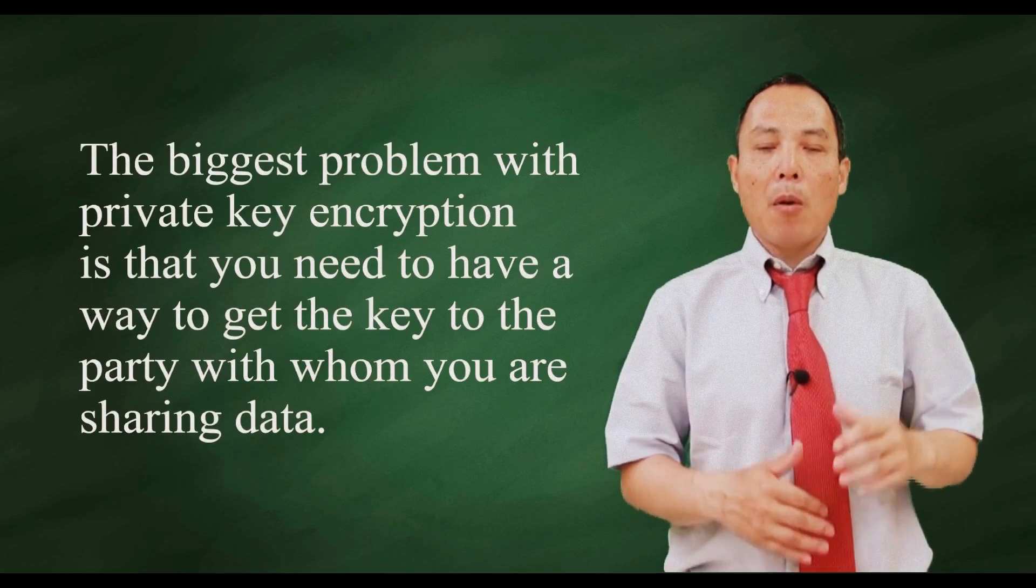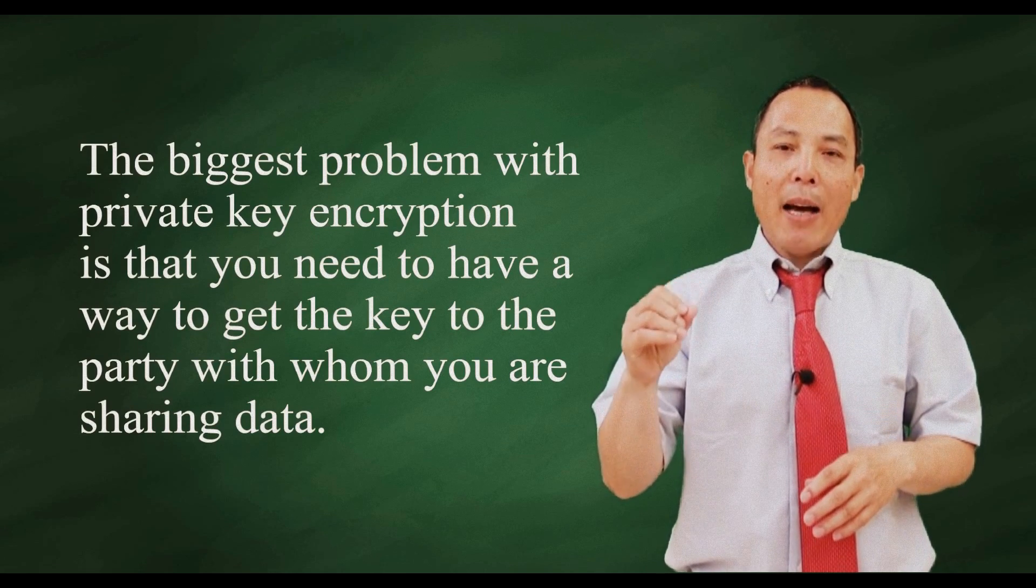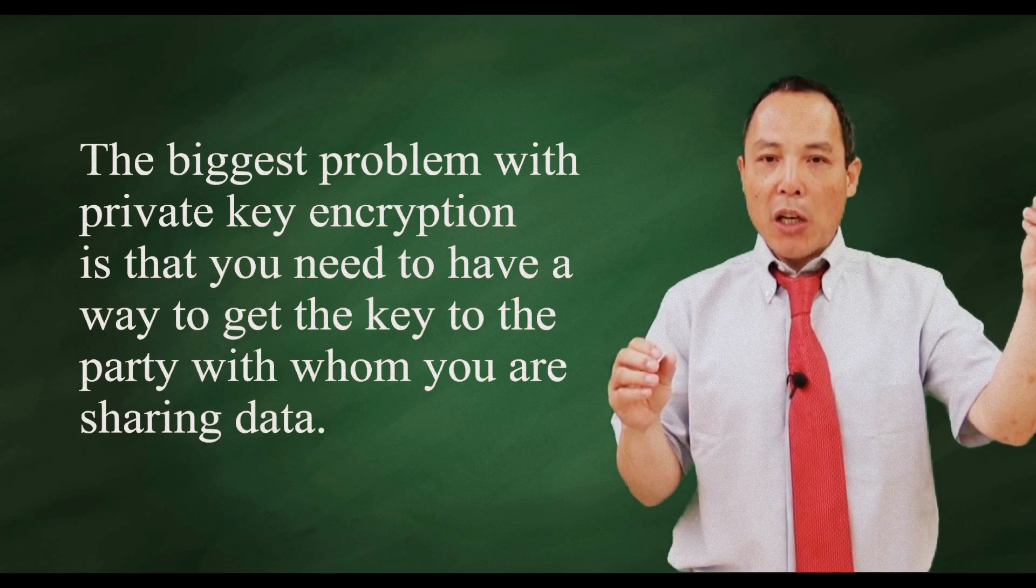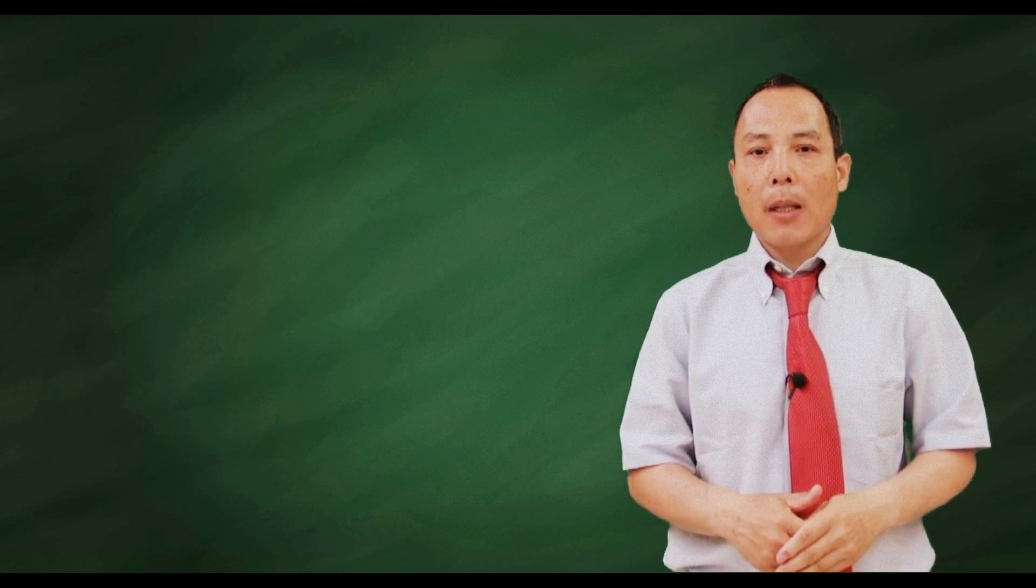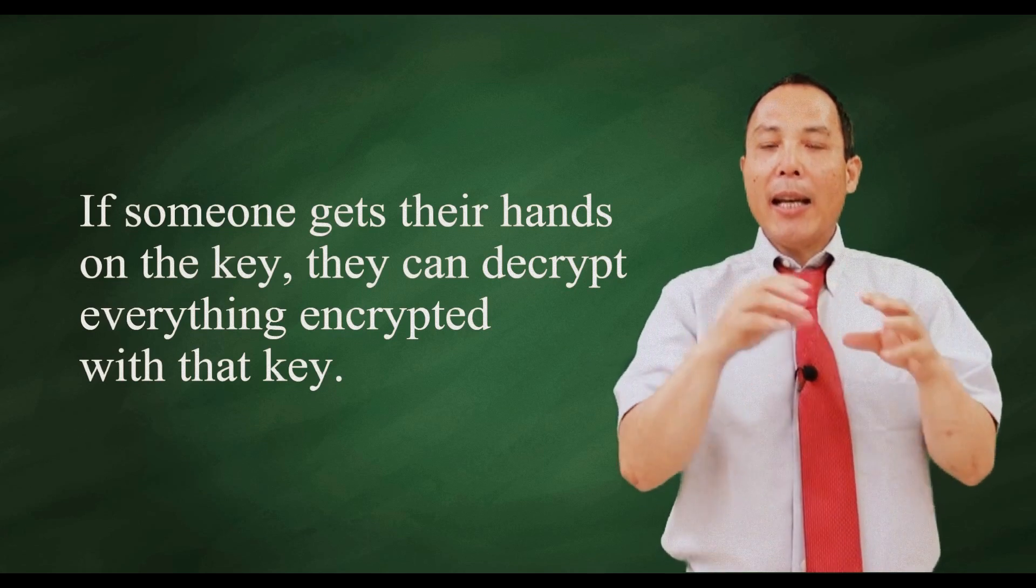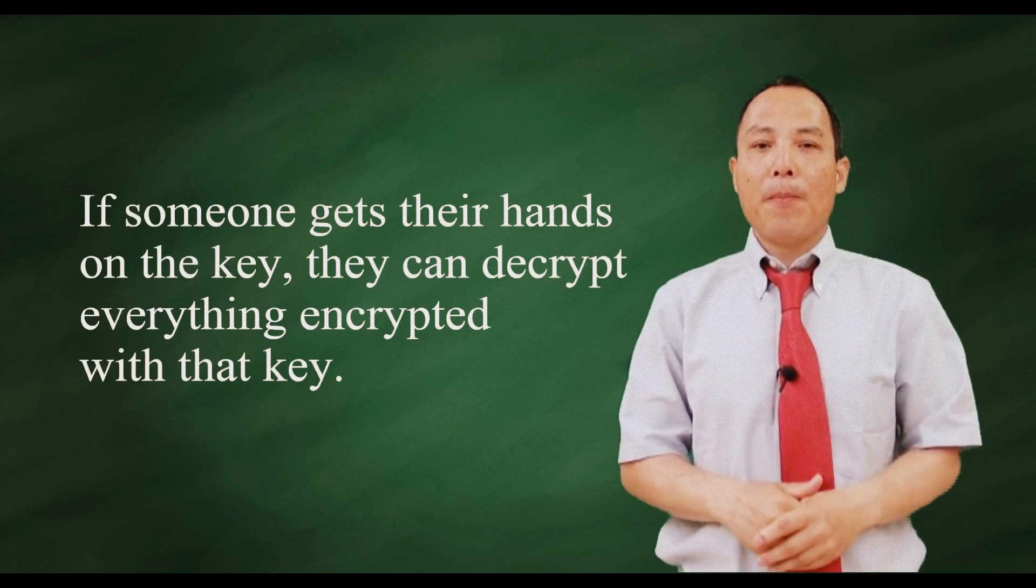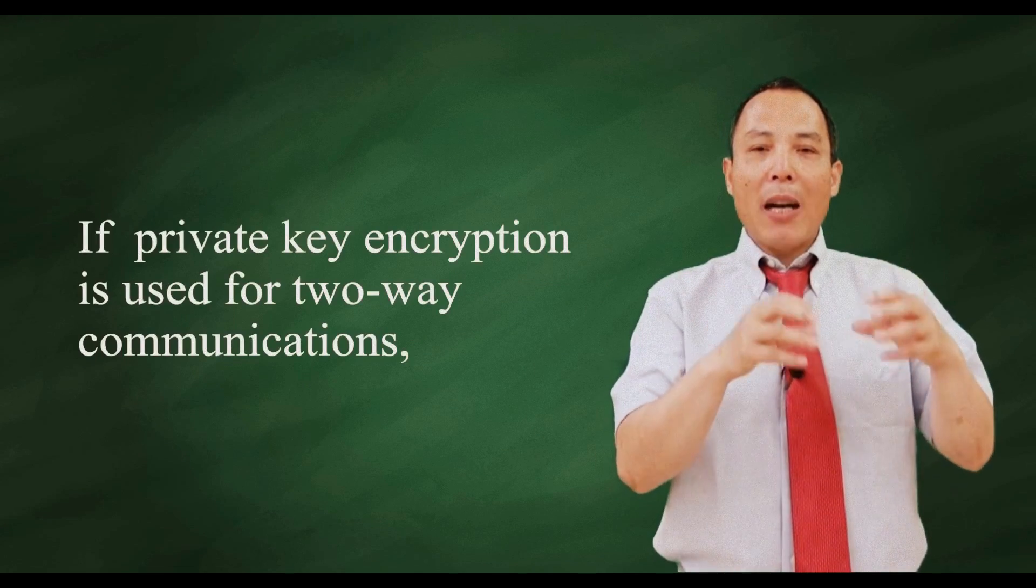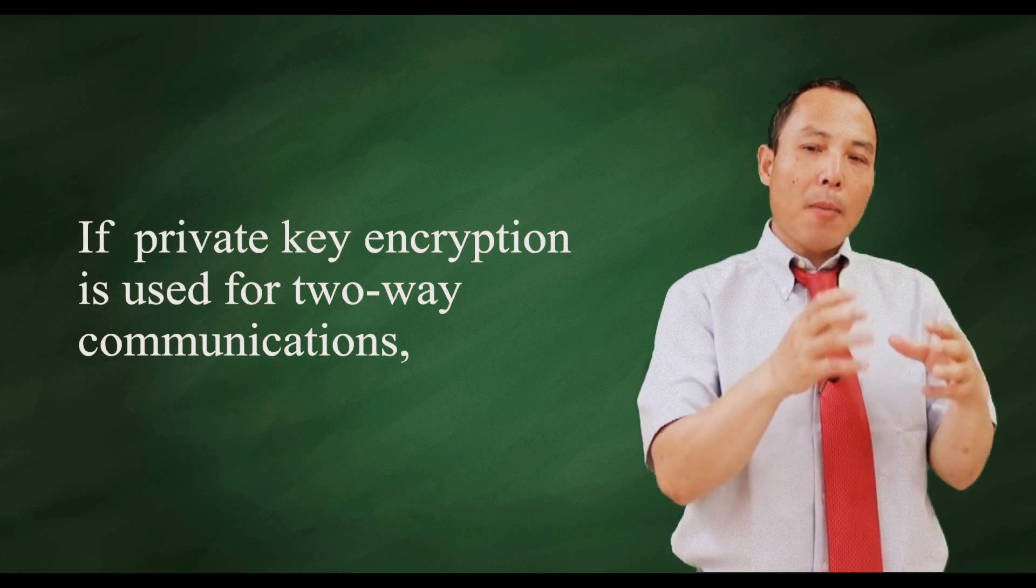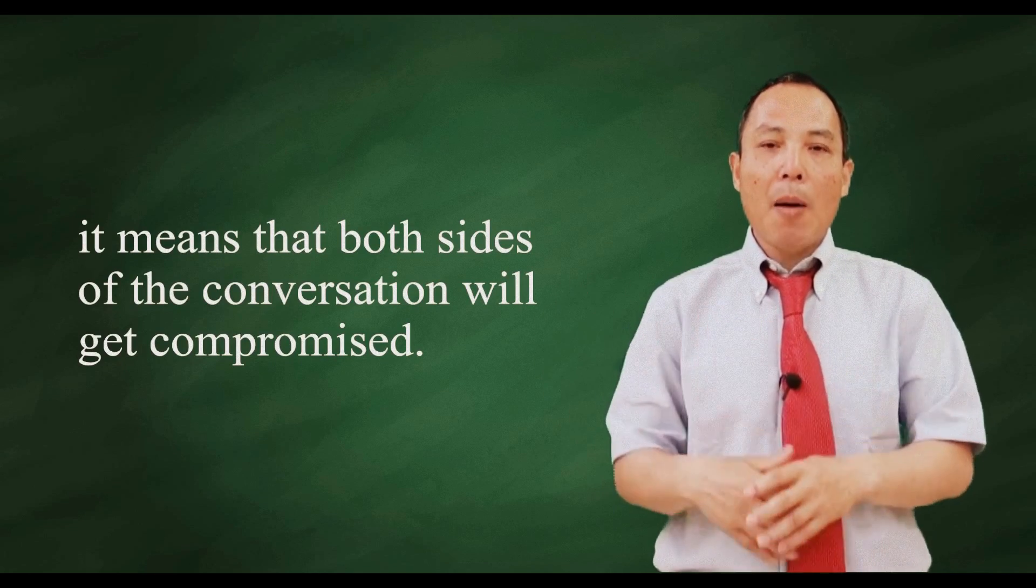The biggest problem with private key encryption is that you need to have a way to get the key to the party with whom you are sharing data. If someone gets their hands on the key, they can decrypt everything encrypted with that key. If private key encryption is used for two-way communications, it means both sides of the conversation will get compromised.